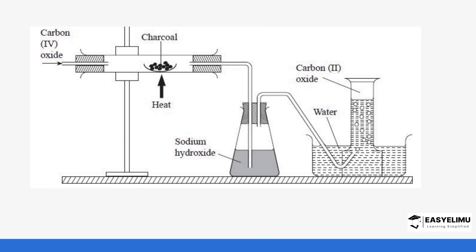Carbon monoxide can also be prepared by reacting carbon dioxide with charcoal. Carbon dioxide and charcoal react, and carbon takes away the oxygen from CO₂ to form carbon monoxide. In this setup we also have sodium hydroxide solution — if any excess carbon dioxide passes through, it will react with the sodium hydroxide solution so that the only gas collected is carbon monoxide.